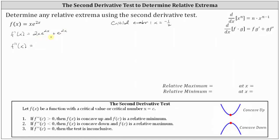We apply the product rule to differentiate 2x·e to the 2x. f double prime of x equals 2x times the derivative of e to the 2x, which is 2e to the 2x, plus e to the 2x times the derivative of 2x, which is 2, plus the derivative of e to the 2x, which is 2e to the 2x. Simplifying, we have f double prime of x equals 4x·e to the 2x plus 4e to the 2x.